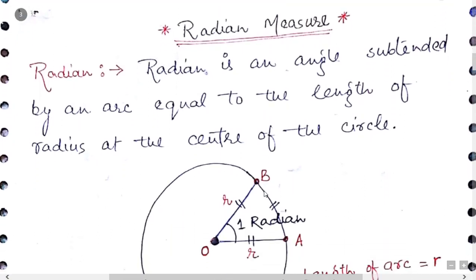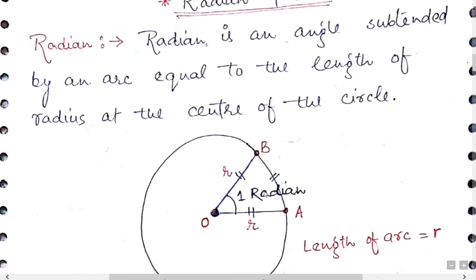This point is important. What is the meaning of radian? A radian is an angle subtended by an arc equal to the length of the radius at the center of the circle. This angle is the radian angle subtended by arc AB, where arc AB is equal to the length of the radius, and it is measured at the center of the circle.